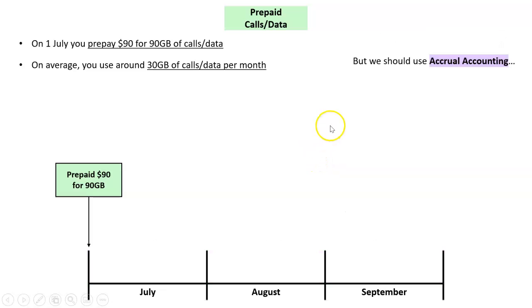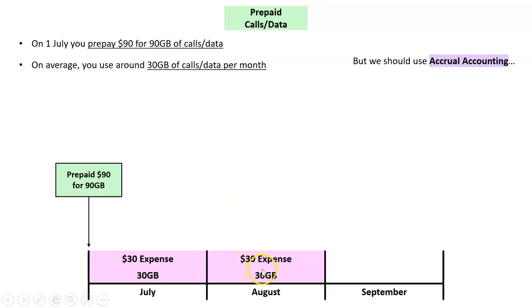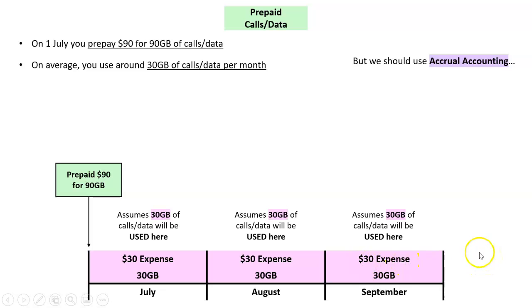So what we do instead is use accrual accounting. That means we should recognize a $30 expense for July because we use a third of the data each month — 30 gigs each month, having paid for 90. So we use $30 worth in August and the same in September. That's more accurate; it matches our actual usage with the expense.